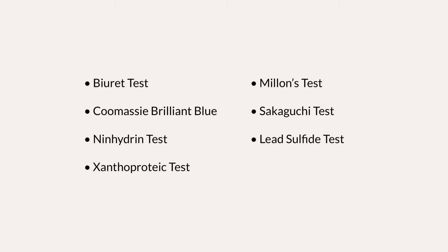There are many qualitative tests to try depending on the protein you're looking at. In this video, we'll cover just a few of these, including the Biuret test, Coomassie Brilliant Blue, Ninhydrin test, Xanthoproteic test, Millon's test, Sakaguchi test, and the lead sulfide test.